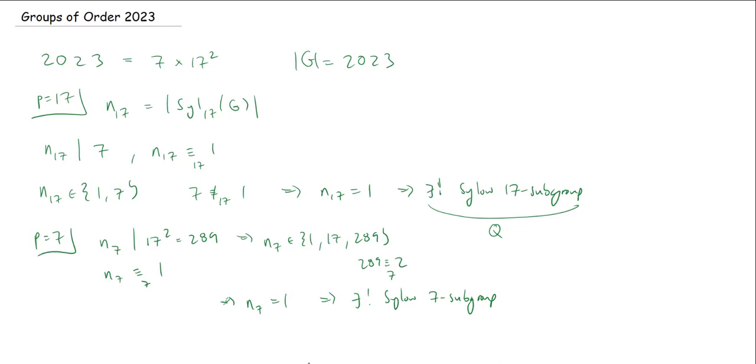And so there exists a unique Sylow 7 subgroup. Now I could just give it a name like P, but I actually know something very specific because the size of a Sylow 7 subgroup is exactly 7. And there's only one group of order 7, right? It's a cyclic group of order 7.